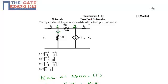Hello friends, this question is from test series 4 in the subject of network and topic two port networks. In the circuit we need to find out the open circuit impedance matrix, which means we need to find out the Z-parameter matrix of the circuit.